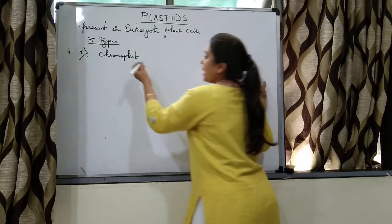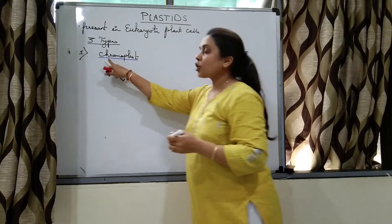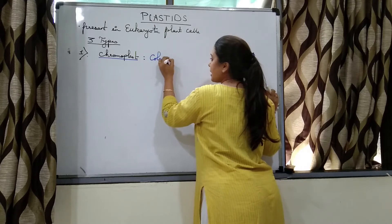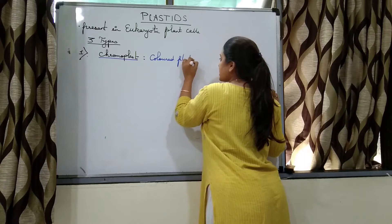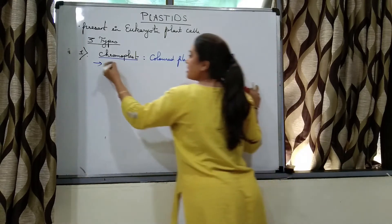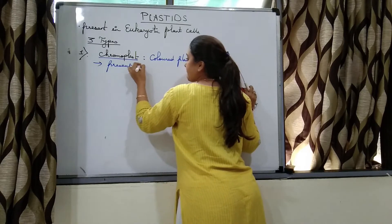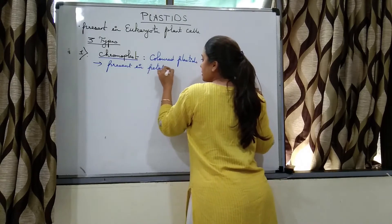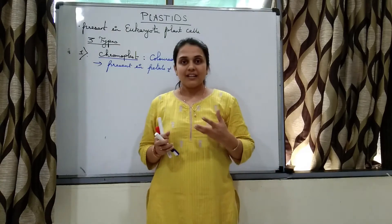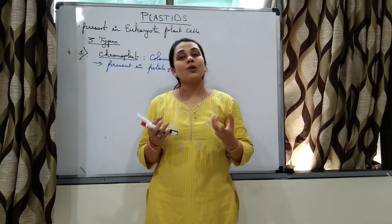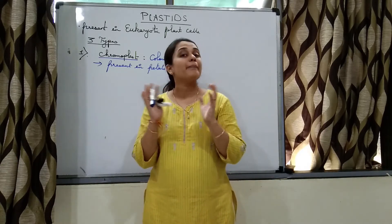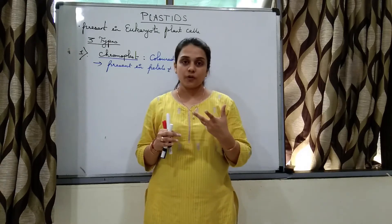The name chromoplast itself tells us: 'chromo' means color, so these are colored plastids. Chromoplasts are present in petals and pericarp. Petals are of different colors — yellow, orange, bluish, purplish — they are very attractive. The pericarp also possesses chromoplasts.